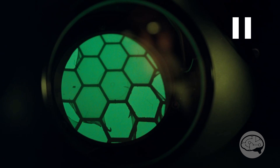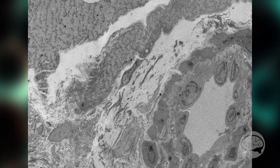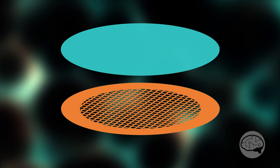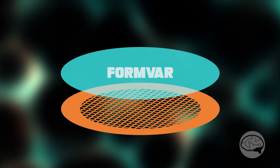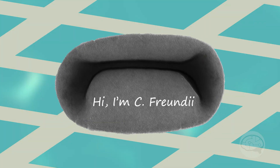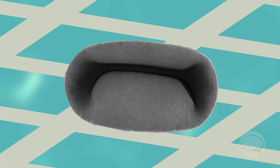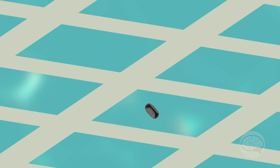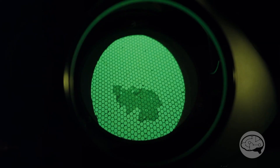This grid will hold large flat samples like sections from a microtome, or as in this case, it will have an ultra-thin film made of a material called formvar covering it. Whatever it is that we're looking at — be it particles, bacteria, viruses, or whatever — they will sit on this very electron-transparent formvar and allow us to look at them. So the basic setup here is a TEM grid, which is exactly what this is.